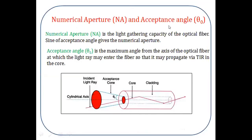Now I will explain numerical aperture and acceptance angle with the help of this diagram. The given fiber consists of a core and a cladding region. At the point of entry, this cone is called the acceptance cone. Any light ray launched into the core within this cone undergoes total internal reflection. The sine of this angle is called the numerical aperture, which physically signifies the light-gathering capability of the optical fiber. The acceptance angle is the maximum angle from the axis of the fiber at which a light ray may enter so that it propagates via total internal reflection in the core.